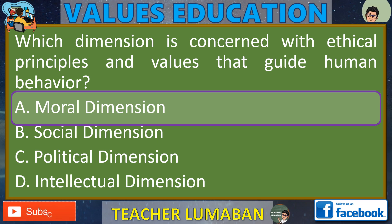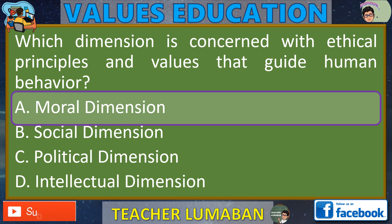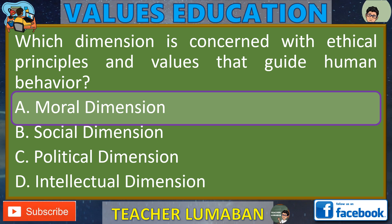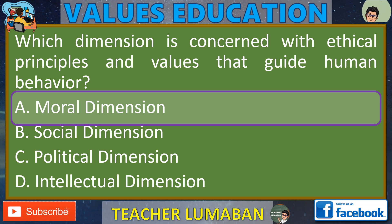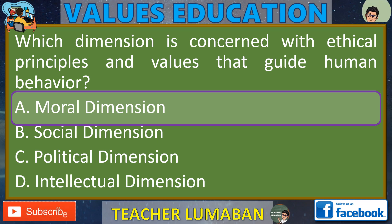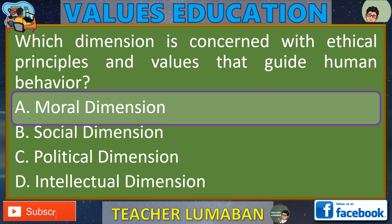The intellectual dimension relates to cognitive abilities, knowledge, and intellectual pursuits. It involves critical thinking, problem-solving, creativity, and the acquisition and application of knowledge. Ang intelektwal na dimensyon ay nauugnay sa mga kakayahang nagbibigay malay, kaalaman, at intelektwal na hangarin. Therefore, out of the given options, the dimension that specifically deals with ethical principles and values guiding human behavior is the moral dimension, option A. Sa makatuwid, ang dimensyon na partikular na tumatalakay sa mga etikal na prinsipyo at pagpapahalagang gumagabay sa pag-uugali ng tao ay ang moral na dimensyon, option A.